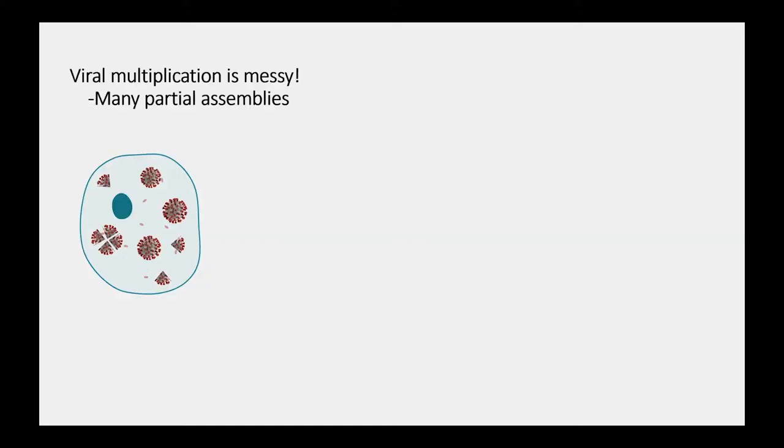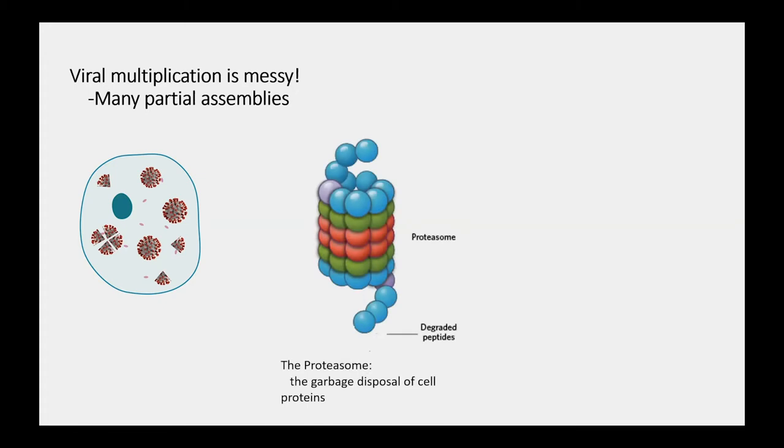Now, a downfall of when a virus is infecting a cell is that it's actually pretty messy. It tries to make many, many copies of itself, but a lot of those are miscopied, bad copies. What I'm showing here is that instead of a nice virus, we've got parts of a virus that happen. When that happens, our cell tries to deal with that. Our cells have a way of disposing of these bad proteins. That is actually, ultimately, how our body recognizes viruses.